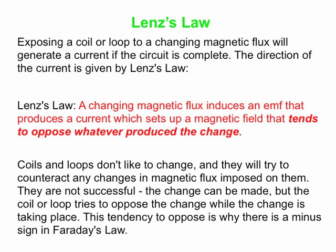And this tendency to oppose is why there is this minus sign in Faraday's Law. Faraday's Law says the EMF is minus the number of turns in the coil times the time rate of change of that flux. So this oppositional nature — this tendency to oppose whatever produces the change — is what that minus sign in Faraday's Law is all about.